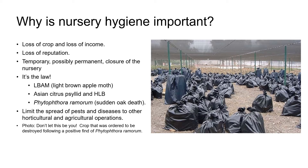Of particular concern in California right now is the Asian citrus psyllid, which is the vector for the bacterial disease HLB or citrus greening. Florida has already lost over 50 percent of its citrus industry to this disease and there are concerns it may do the same in California, where our citrus industry is worth 1.2 billion dollars a year. For some years there have been strict regulations in place for the propagation and movement of citrus plants.